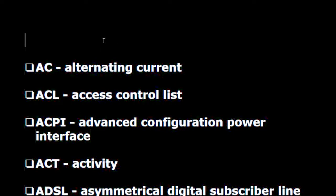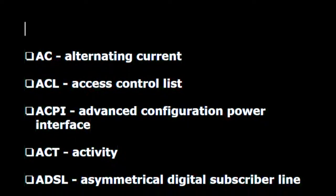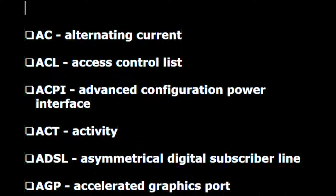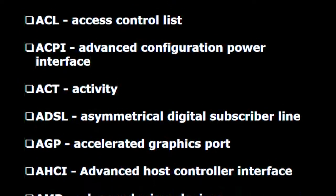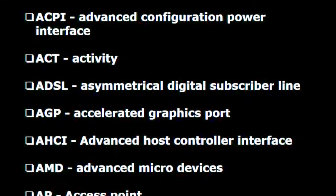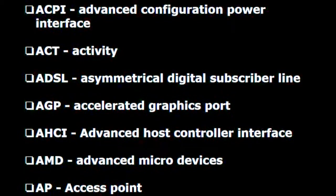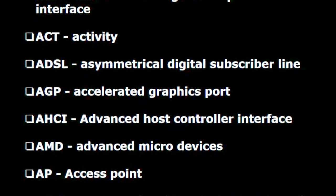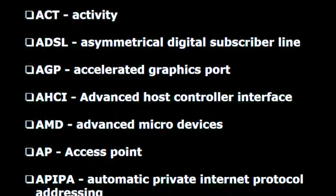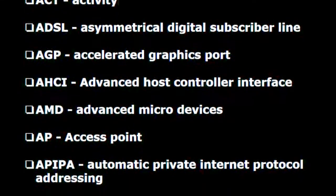A.C. — Alternating current. A.C.L. — Access control list. A.C.P.I. — Advanced configuration power interface. A.C.T. — Activity. A.D.S.L. — Asymmetrical digital subscriber line. A.G.P. — Accelerated graphics port. A.H.C.I. — Advanced host controller interface. A.M.D. — Advanced micro devices.